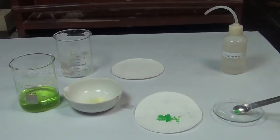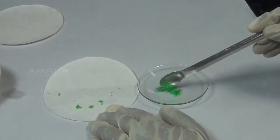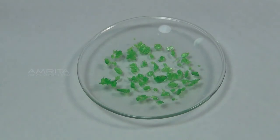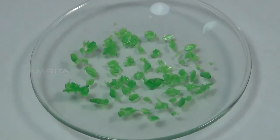Now transfer the crystals into a watch glass. The crystals of pure potassium trioxalatoferrate are emerald green in colour and are octahedral in shape.